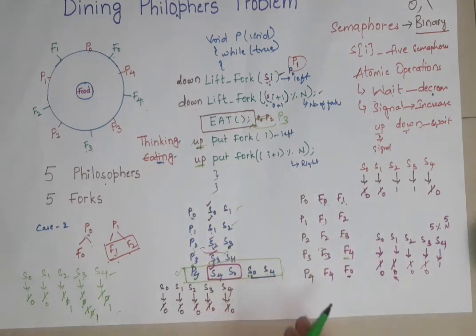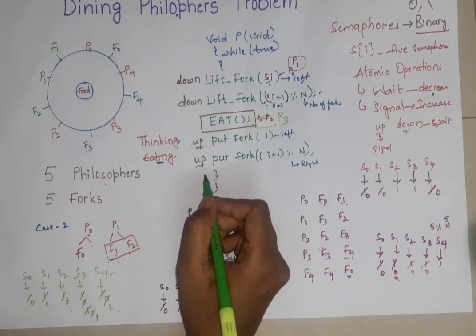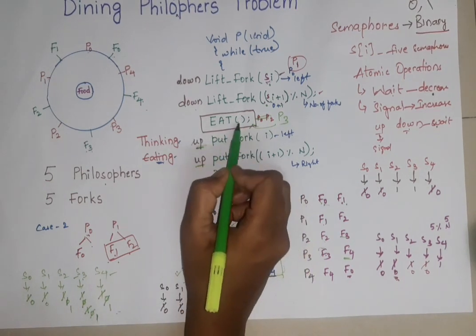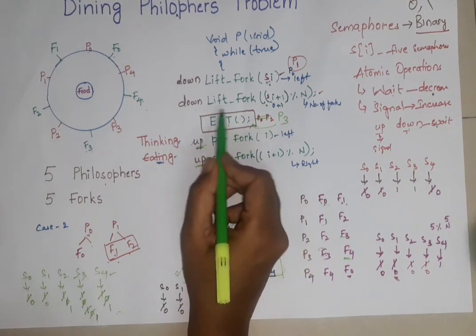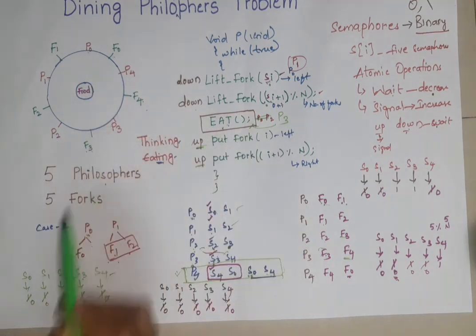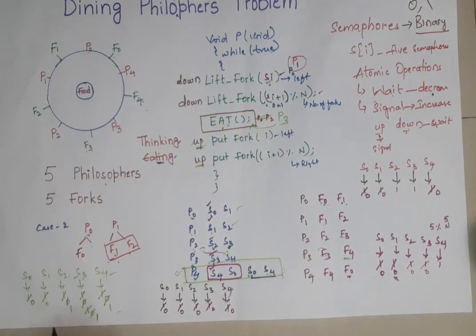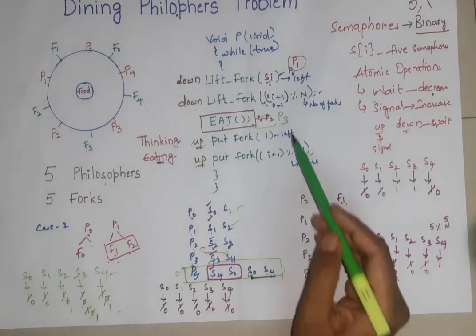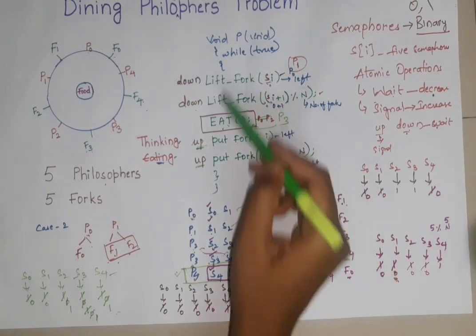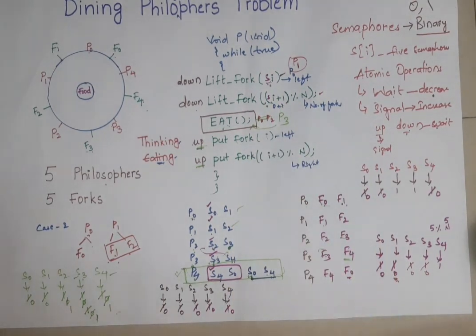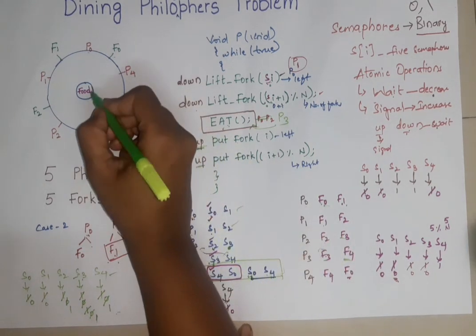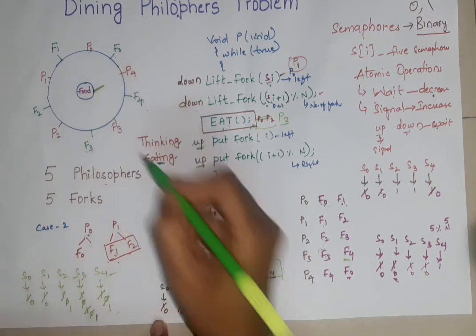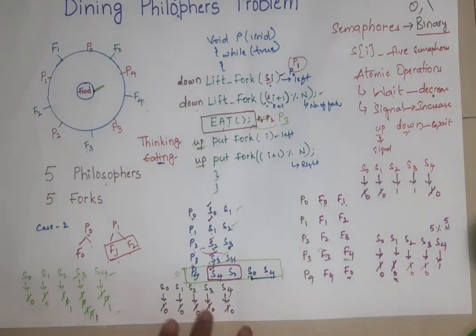This is how you can resolve the problem of dining philosophers. The only thing you have to remember is, at the same time, two philosophers can be in the critical section if they are independent. And by reversing these two values, you can avoid the deadlock situation present in this code. This is all about dining philosopher problem. Thank you.